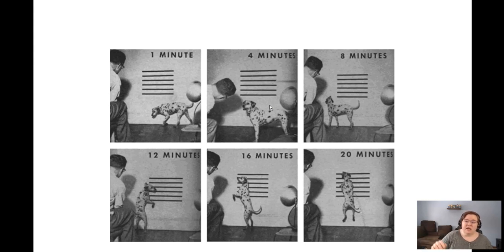Around eight minutes, you see that the dog when being reinforced is consistently orienting toward the wall and then Skinner starts to withhold reinforcement. Now the dog can't earn reinforcement just for being near or looking at the wall. Now the dog has to give you a little bit more.